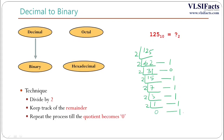Now we collect these remainders from bottom to top. In other words, the bottom bit will be the MSB and the top bit will be the LSB. So reading from MSB to LSB, the binary digits are 1 1 1 1 1 0 1.